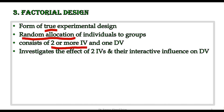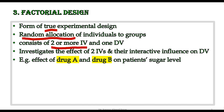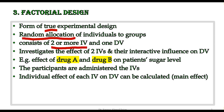For example, if in an experiment we want to find the effect of two drugs — Drug A and Drug B — on the patient's sugar level, we have two independent variables: Drug A and Drug B. The patient's sugar level is the dependent variable. We can administer these two drugs to different groups of patients and see the effect of both drugs on the patient's sugar level. Such studies fall under factorial design.